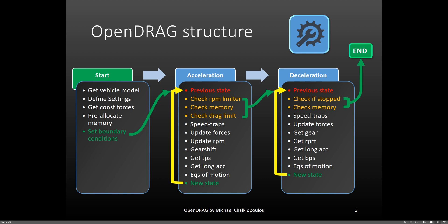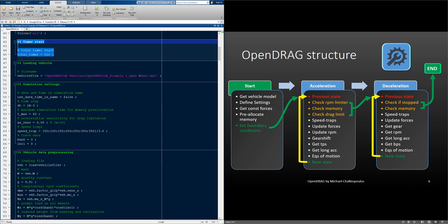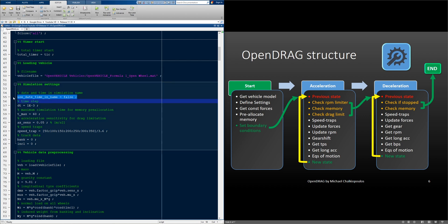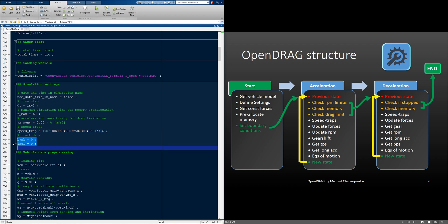Now let's look at the code itself. First, we clear the memory. Then, we start the total simulation timer. After, we declare the file name that includes our vehicle model. Then we go into the settings, where we set if we want to use the date and time in the simulation results file name, what our time step is, what our maximum allowed time for the simulation is for our memory pre-allocation, our longitudinal acceleration sensitivity for drag limitations. Then come the speed traps — with this speed trap variable, you can set specific speed values for which you get reports for the needed time and distance that the vehicle needs to reach them. Then we set banking to zero and the constant inclination angle.